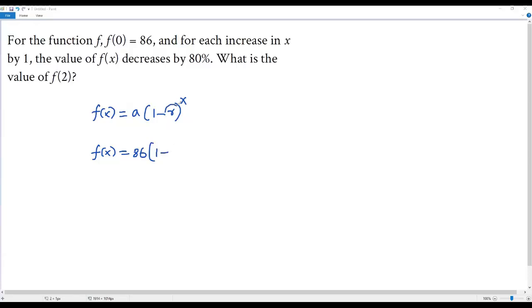1 minus r is the rate of decay. From the given information, 80% is the rate of decay, but we have to write this 80% as a decimal. Whenever I write percentage as a fraction, the denominator will be 100. When I divide 80 by 100, it will be 0.8. So the rate of decay is 0.8 to the power x.